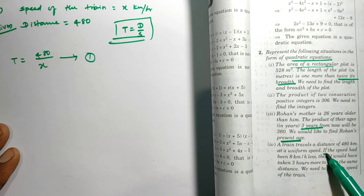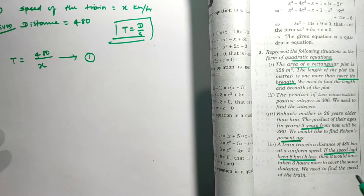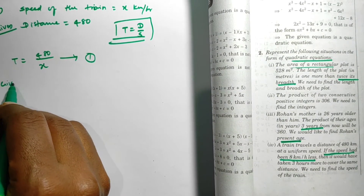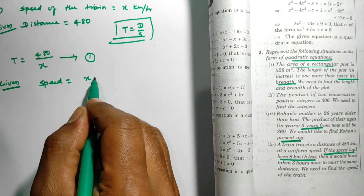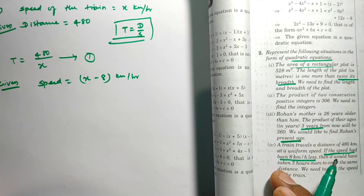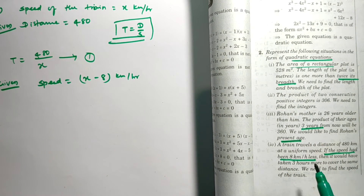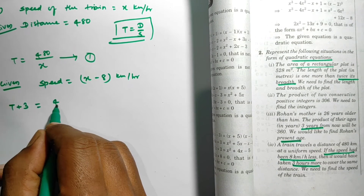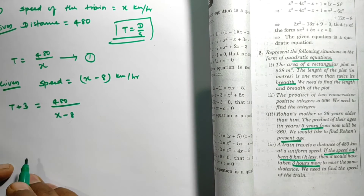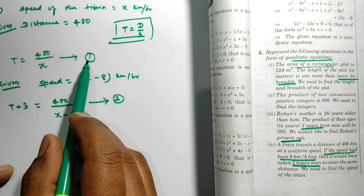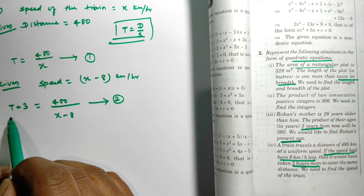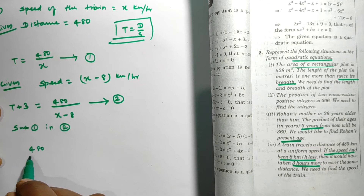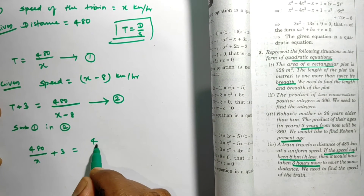The second condition: speed is 8 km/h less, so new speed = x − 8 km/h, and time taken is 3 hours more, so new time = t + 3 = 480/(x − 8). This is equation 2. Substituting t = 480/x from equation 1 into equation 2 gives: 480/x + 3 = 480/(x − 8).